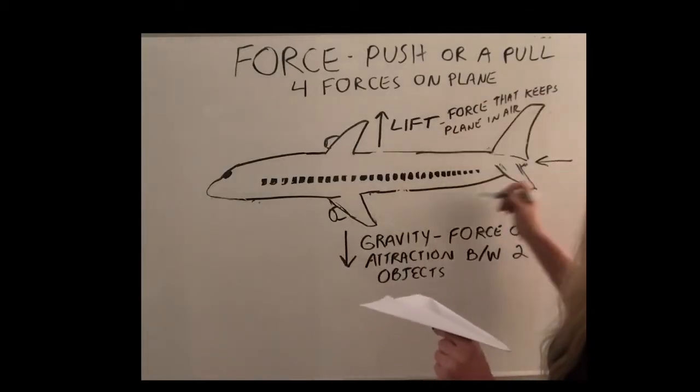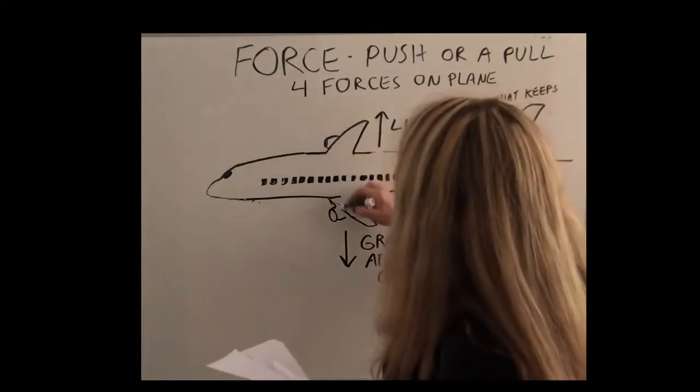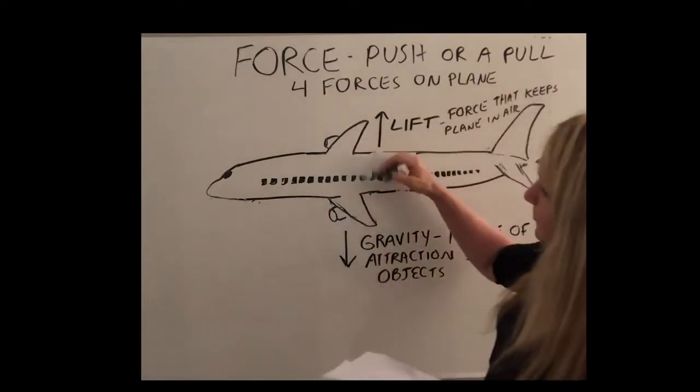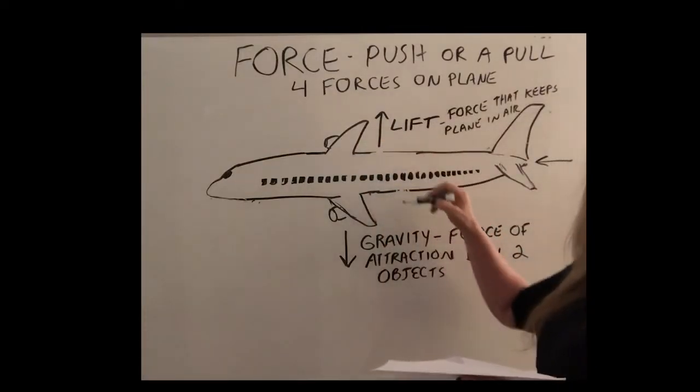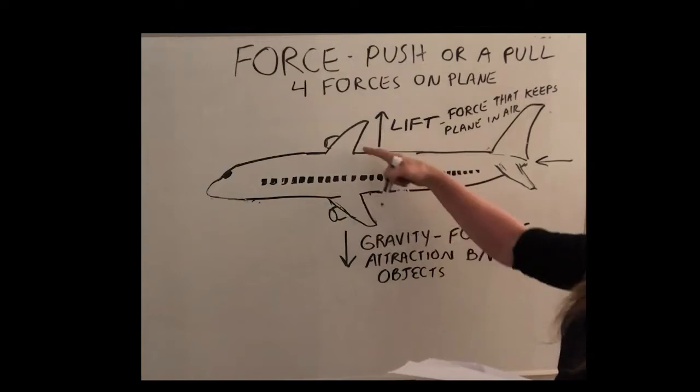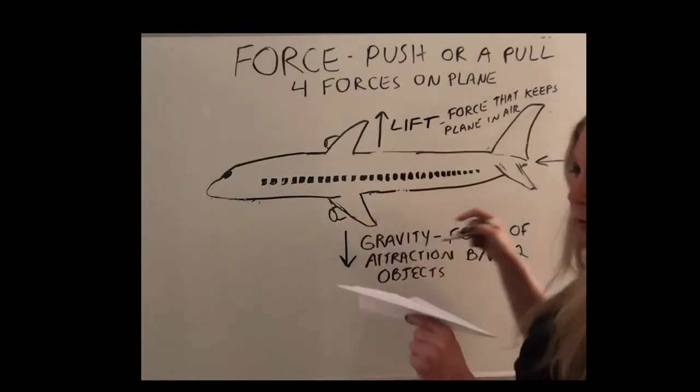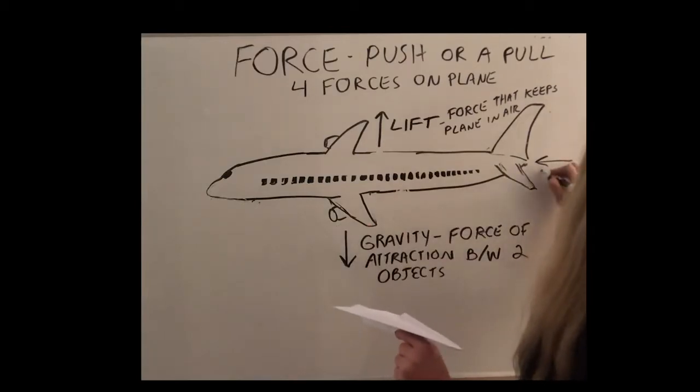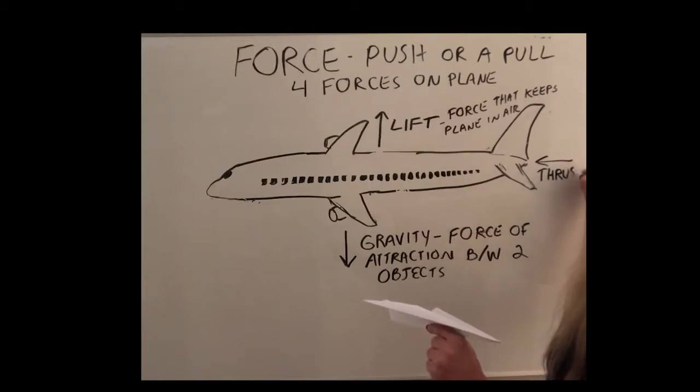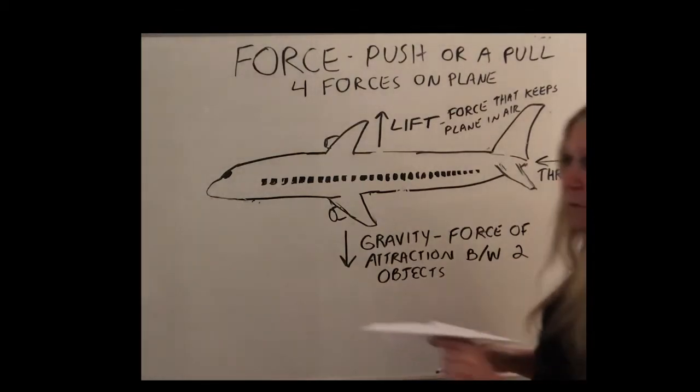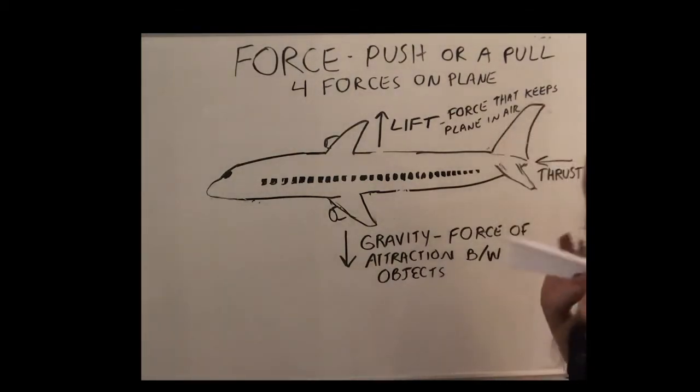So the engine, which are under the wings, they actually store gas in the wings. The gas tanks are in the wings of the airplane. And these engines are under the wings. And those engines provide the force called thrust. And that's the force that gets the plane moving. So you hit the gas pedal, that gets the plane moving.